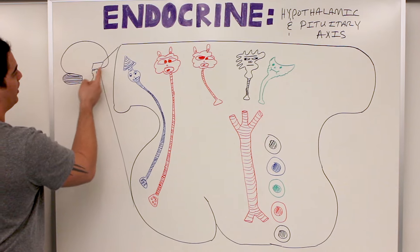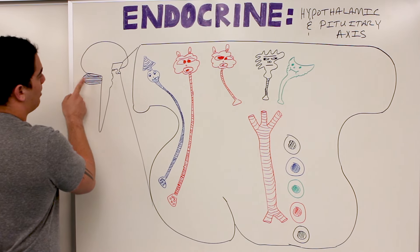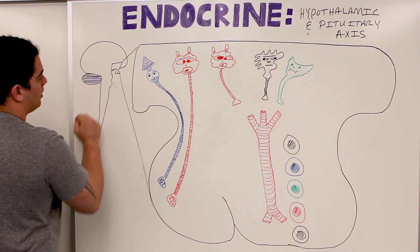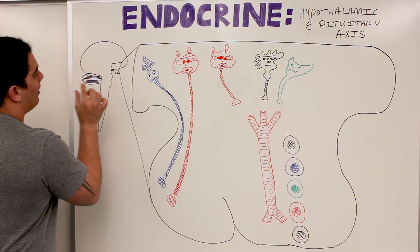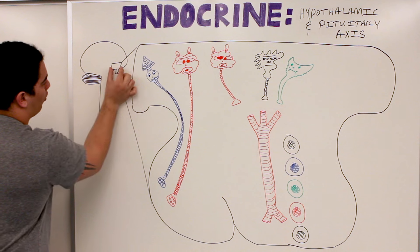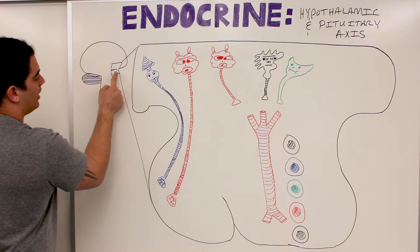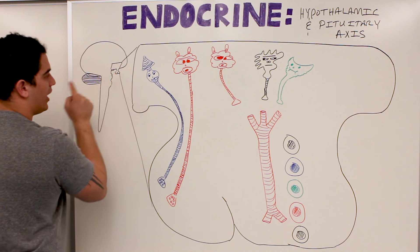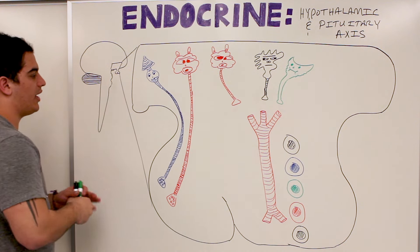Here I have the cerebrum, or the telencephalon, then the cerebellum, midbrain, pons, medulla, and spinal cord. What I'm doing is taking this piece out right here where the hypothalamus, the mammillary bodies, the infundibulum, and the posterior and anterior pituitary gland are, and we're zooming in on it.